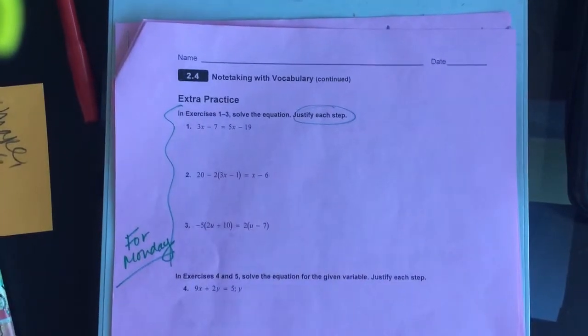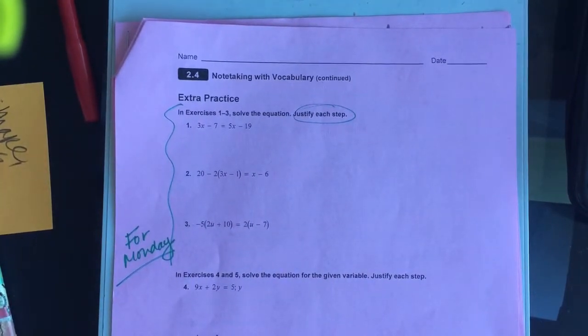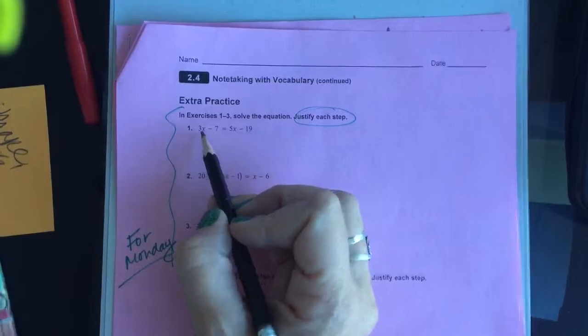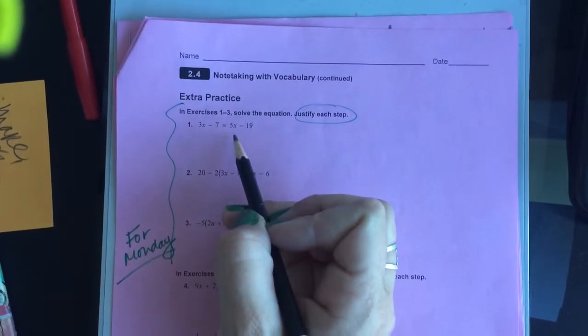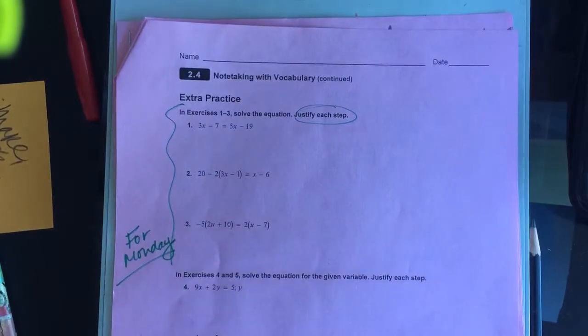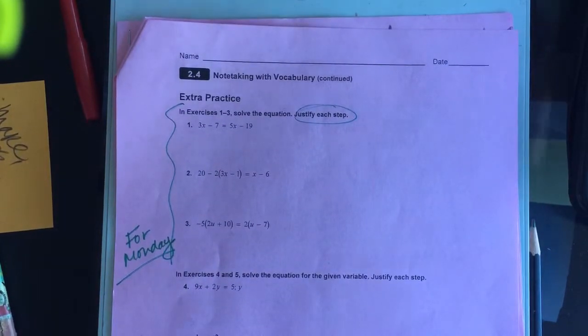When I asked you to solve these for your homework, I think I said you could try to justify each step, but if you didn't, it wasn't the end of the world. When we talked on Friday, we talked about how a problem like this has four different ways to solve it, and if you started a different way than I am right now, you still should get the same answer I do.